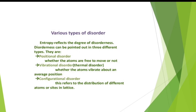There are various types of disorders. Since entropy is a measure of disorder, we will see the types of disorders. First, positional disorder — whether the atoms are free to move or not. Then vibrational disorder, also called thermal disorder — whether the atoms vibrate about an average position. Next is configurational disorder, which refers to the distribution of different atoms on sites in the lattice.